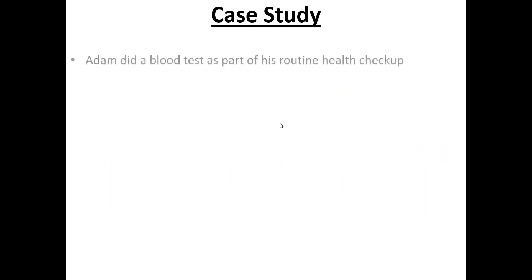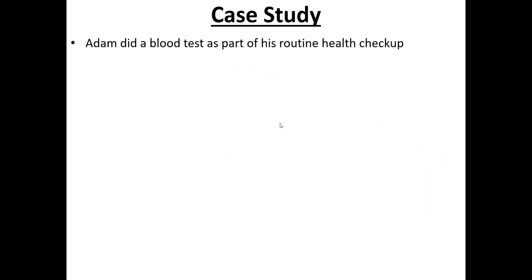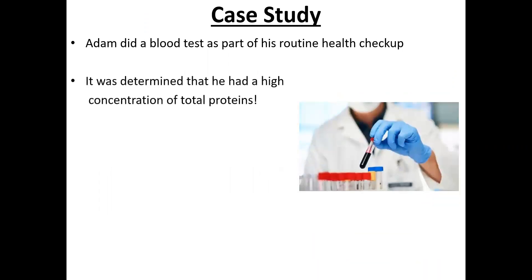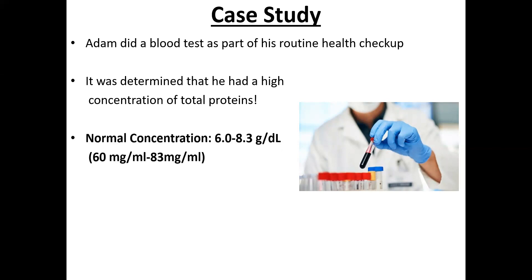Let's present this topic with a case study. Adam did a blood test as part of his routine health checkup — he just wants to check on himself and see if his blood protein concentration is okay. It was determined that he had a high total protein concentration. The normal concentration of total blood protein is between 6 to 8.3 grams per deciliter.